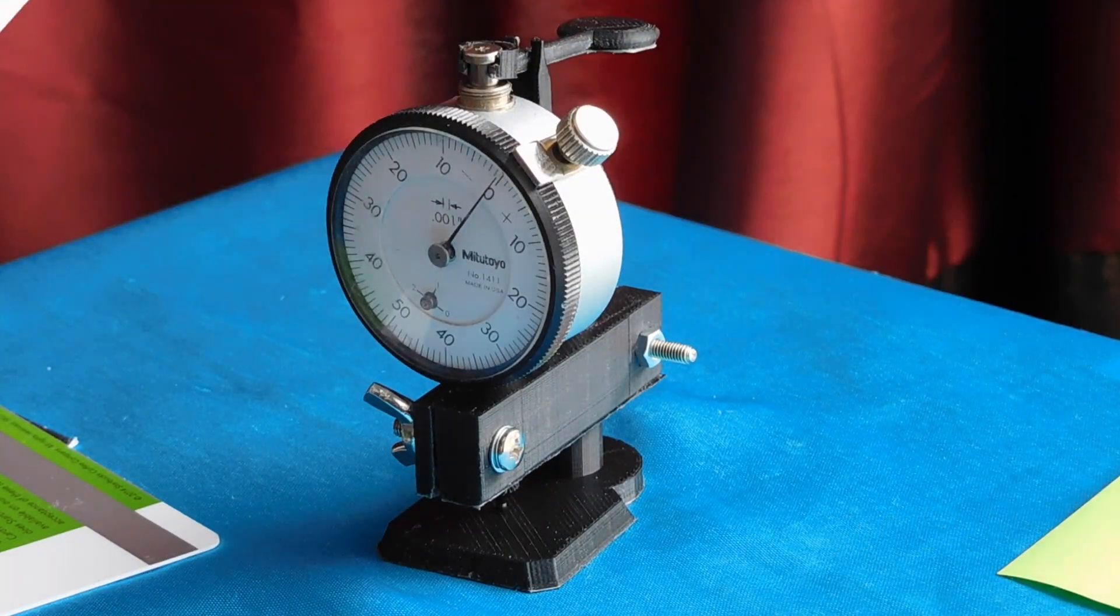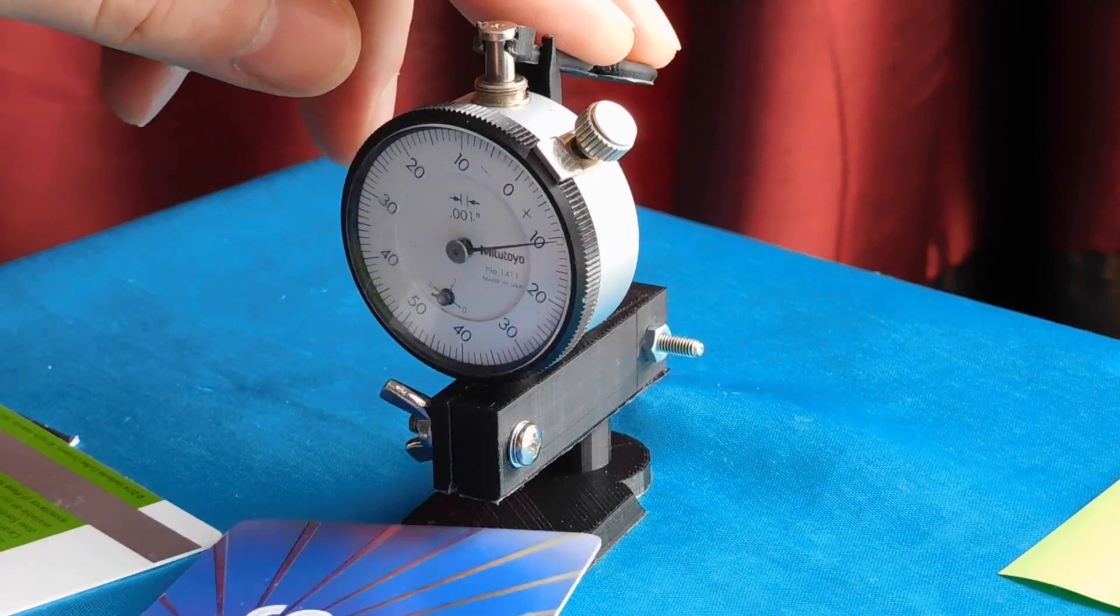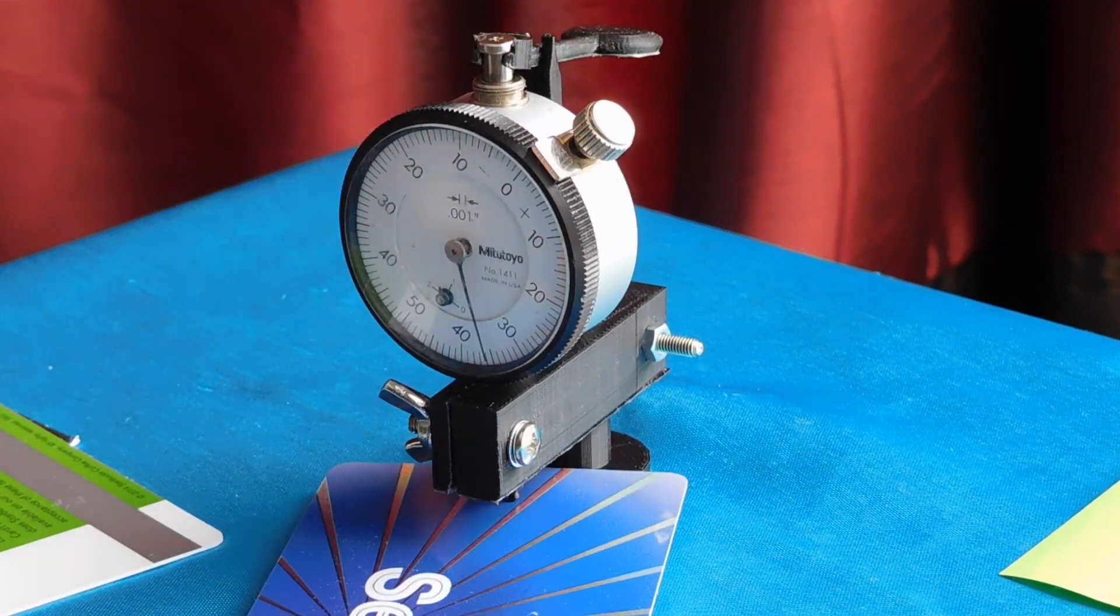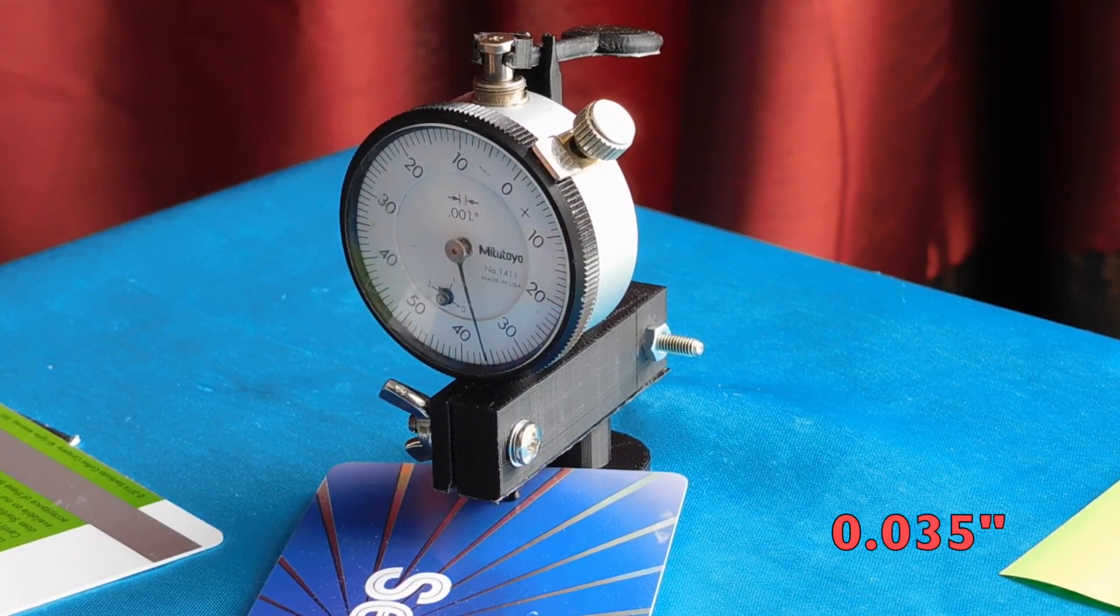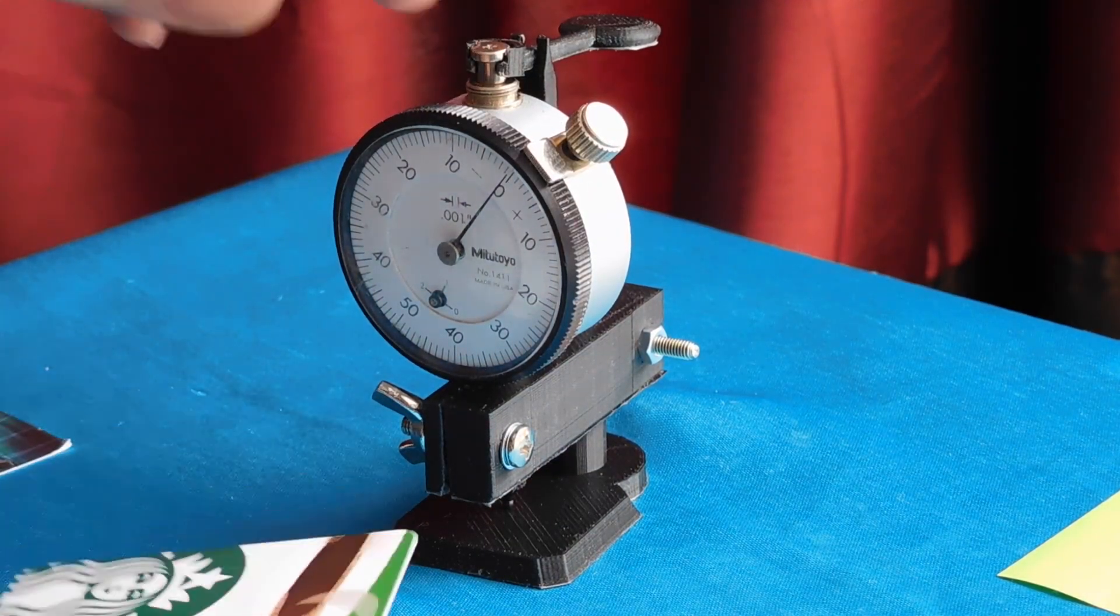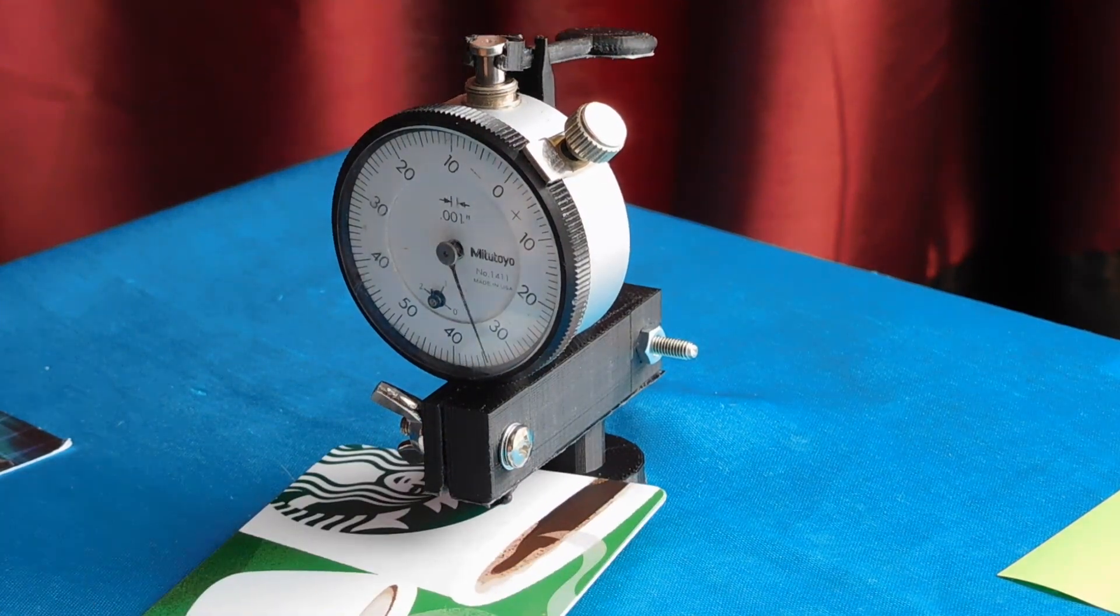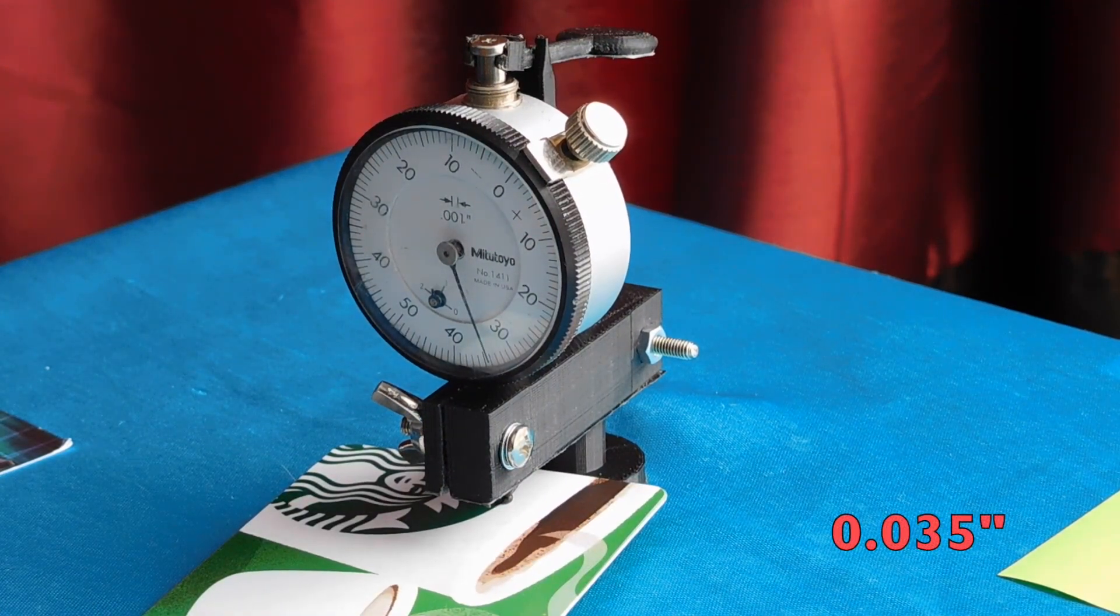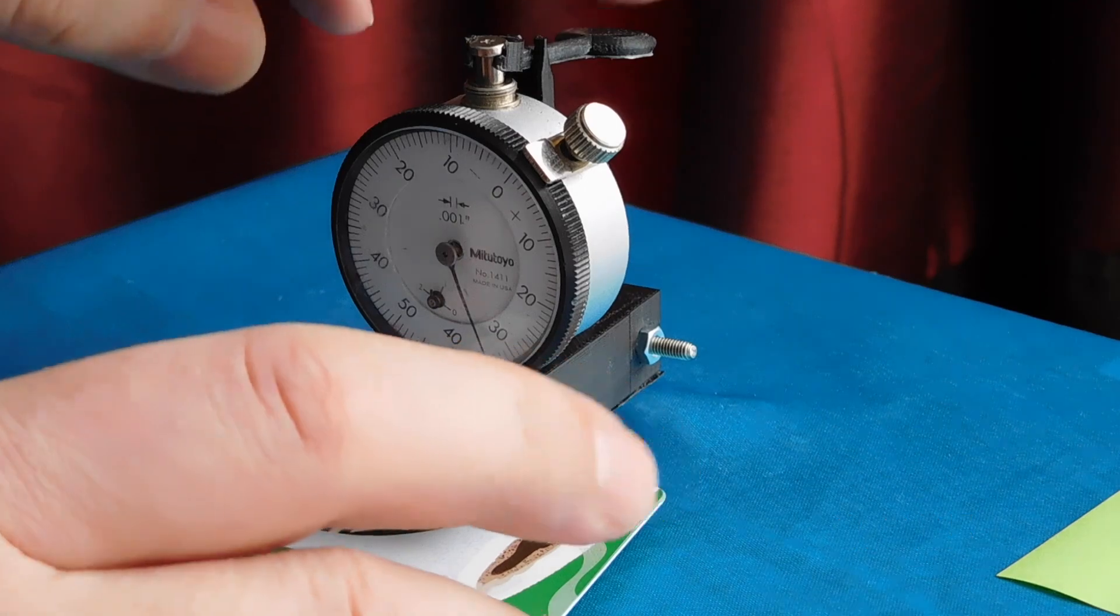You've got a gift card, and it measures about thirty-five thousandths. You've got another gift card, and it measures exactly the same as the last gift card, about thirty-five thousandths.